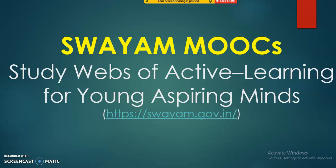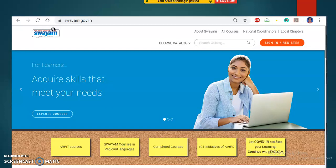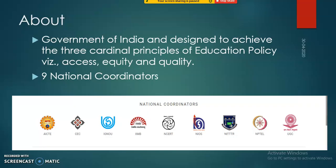The major objective and vision of the SWAYAM platform is the promotion of both school level, college level, and university level education in the country. This is a screenshot of the platform at swayam.gov.in, which is designed to achieve the three cardinal principles of education policy — access, equity, and quality of education.